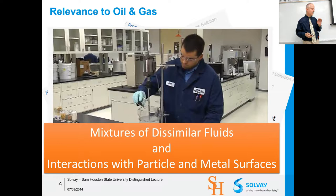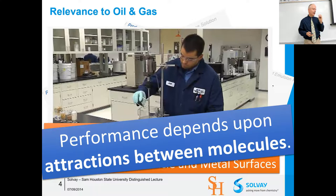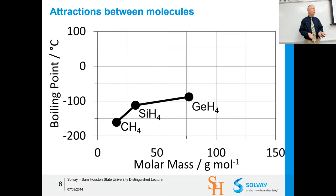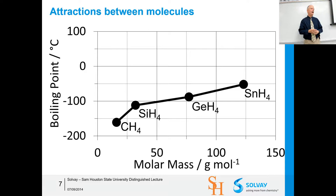Mixtures and interactions happen at the molecular level — that's where Hansen solubility parameters really come into play. One of the simplest ways to track attractions between molecules is their boiling points. Starting with methane and going bigger: methane, then silane — we see molar mass increase and boiling point increase. Going down one more period to germanium, the boiling point increases again, and then for tin a bigger molecule yields a larger boiling point.